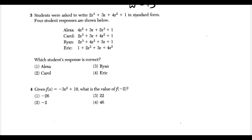For question three, we need to know the definition of standard form: start with the highest power of x and write powers in descending order. Alexa is incorrect because she starts with 4x squared while 2x cubed appears later. Carol is wrong because x to the first appears before x squared. Ryan is correct: x cubed, x squared, x to the first, then the constant. Eric is wrong because x cubed shows up second. Choice three, Ryan, is our solution.